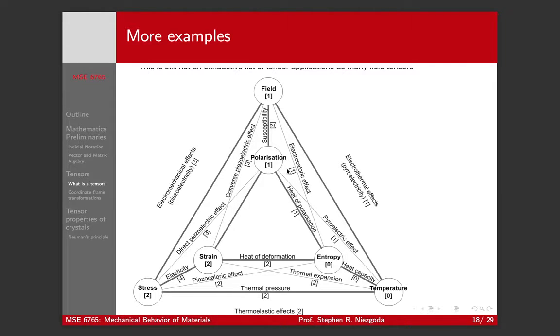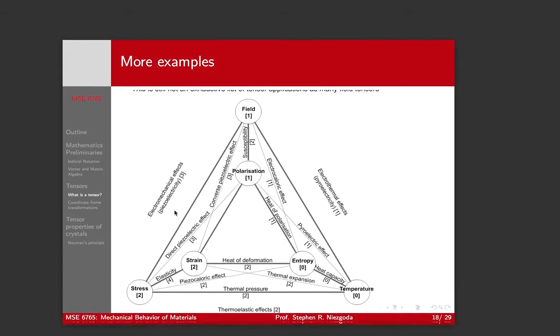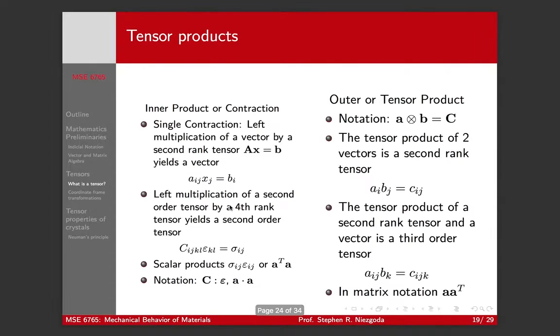This is an important chart just to keep in mind and understand. When people talk about a property, most of the time it's not a simple scalar number. Properties of materials are tensors for the most part. This naturally comes up because most materials are crystalline, but even amorphous materials may have an anisotropy to them that you need a tensorial property to describe.